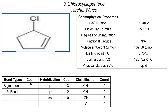3-chlorocyclopentene also has a molecular weight of 102.56 grams per mole. Its melting point is around 8.70 degrees Celsius and a boiling point around 120.7 degrees Celsius. And of course you can find it in a liquid state at 25 degrees Celsius.